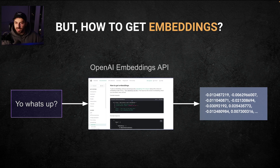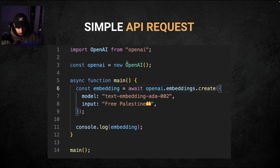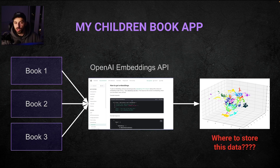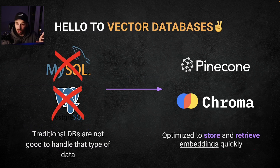Now, how do you get embeddings? How do you create them in the first place? You're not going to create them manually — you're going to use the OpenAI Embeddings API. OpenAI has an API to create those embeddings: you take the text you have, send it to the API, and it generates the vector. The code for this is super simple — literally just a few lines long. You use their embeddings API provided by the OpenAI package, and in this variable you'll have the embedding. For my children's book app, I have a database of high-quality books, I send them all to the embeddings API, and generate a bunch of embeddings. The problem then is: what do I do with this data? I have an array of vectors — a database of embeddings — and I need to store it somewhere to be able to reuse it. That's where vector databases come into the picture.